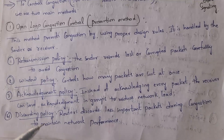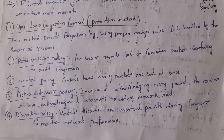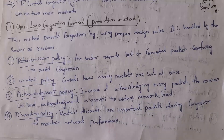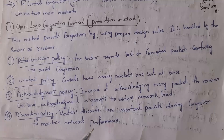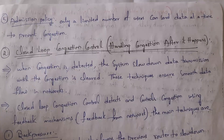The fourth one is discarding policy. If multiple computers send data at the same time, congestion will occur — that is nothing but a traffic jam. In order to overcome this, if multiple computers send data at the same time, we need to accept only important packets and discard less important packets. So routers will discard less important packets during congestion in order to maintain network performance.